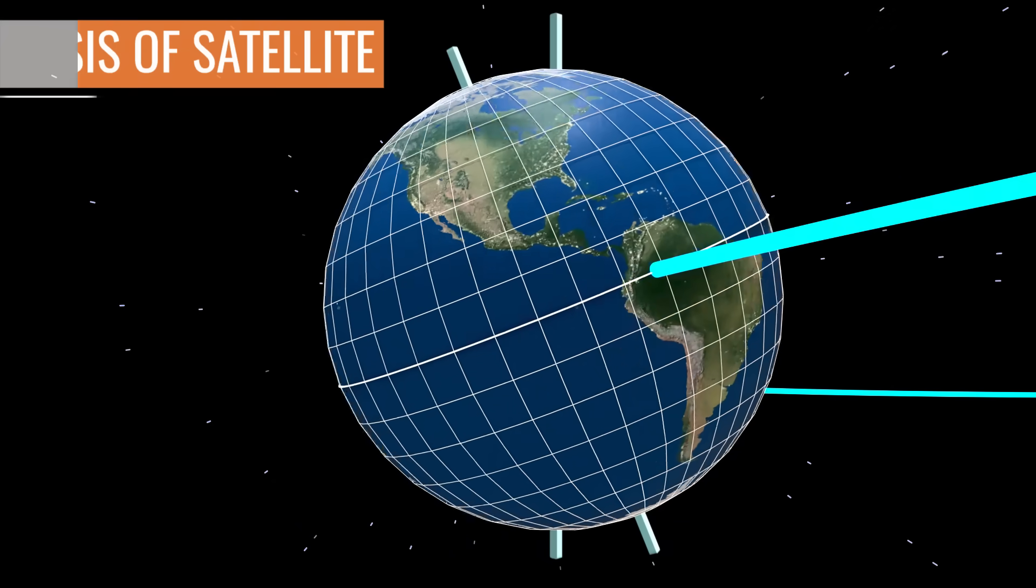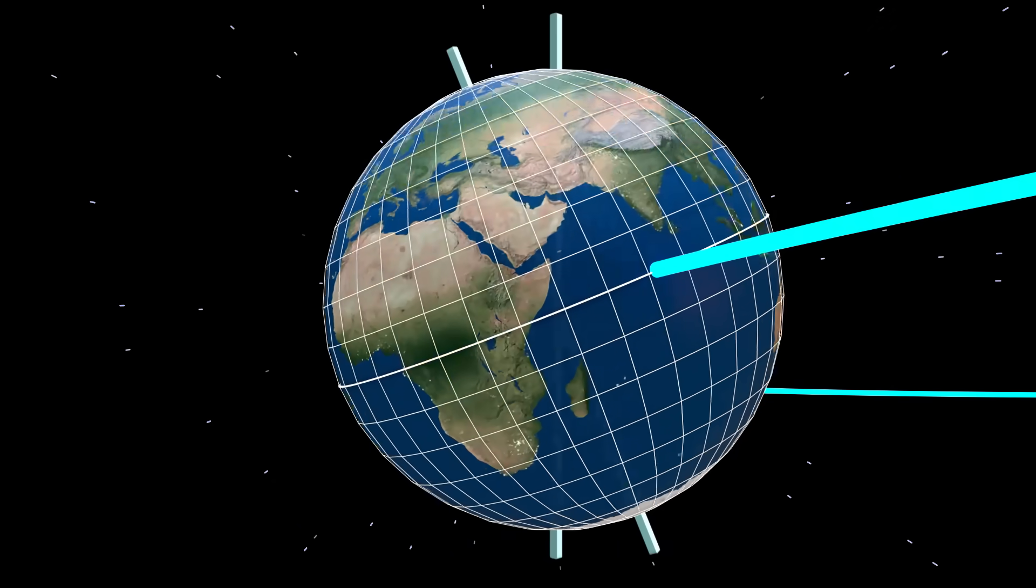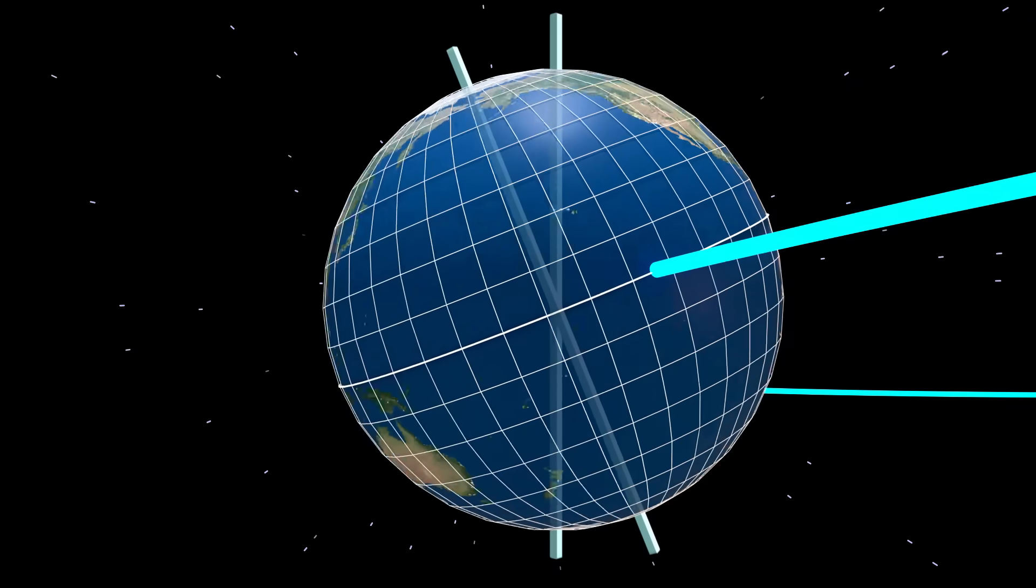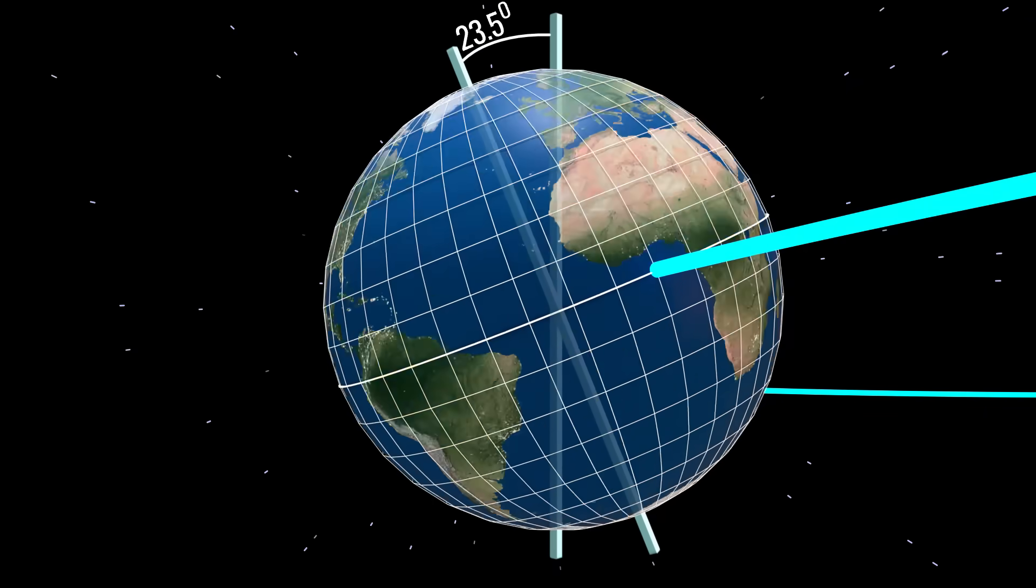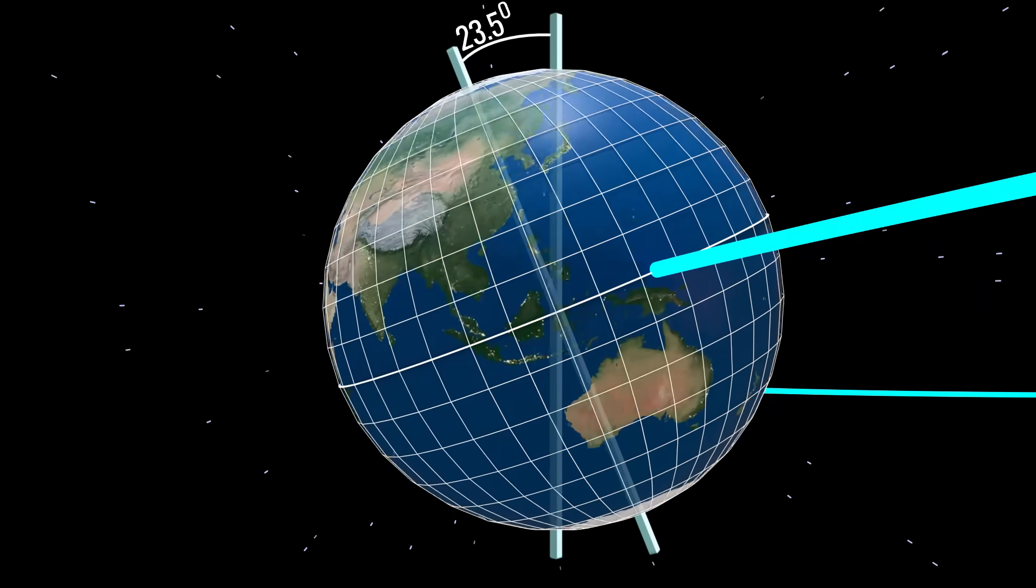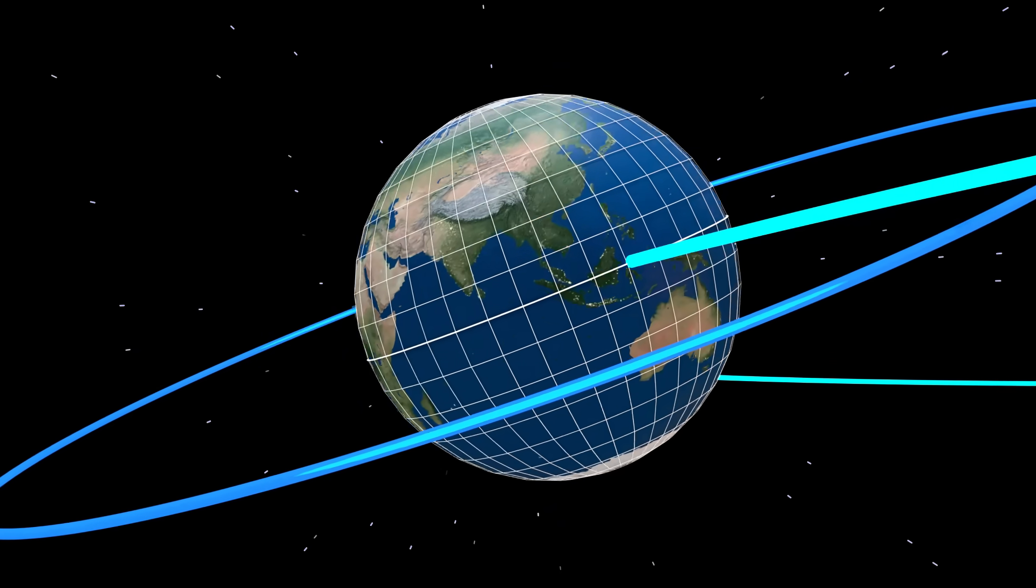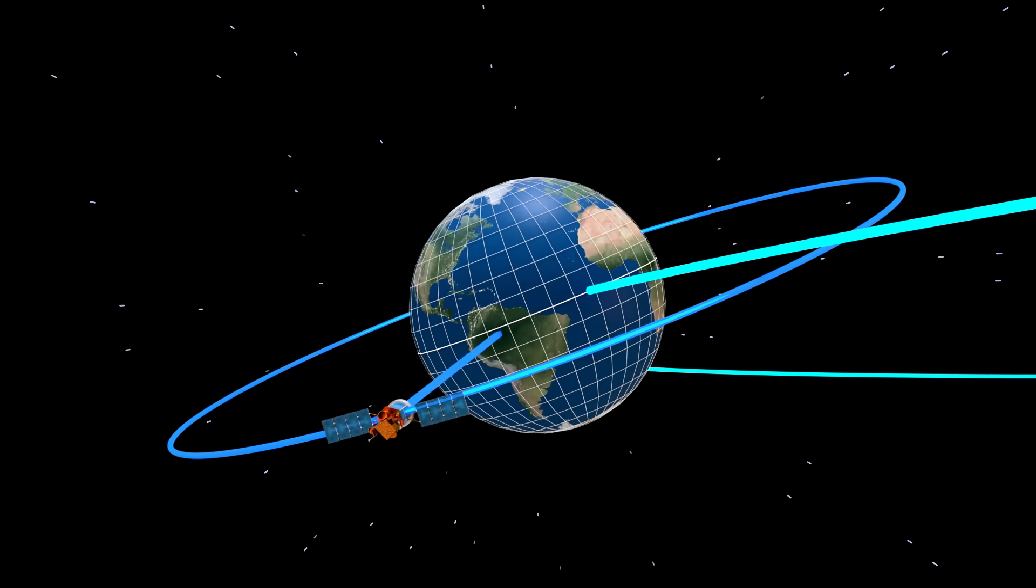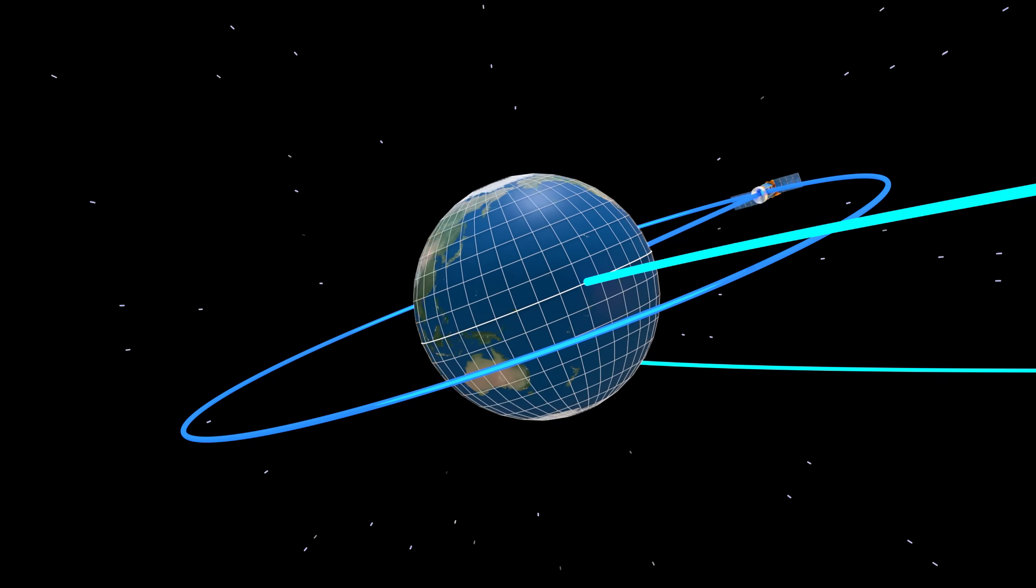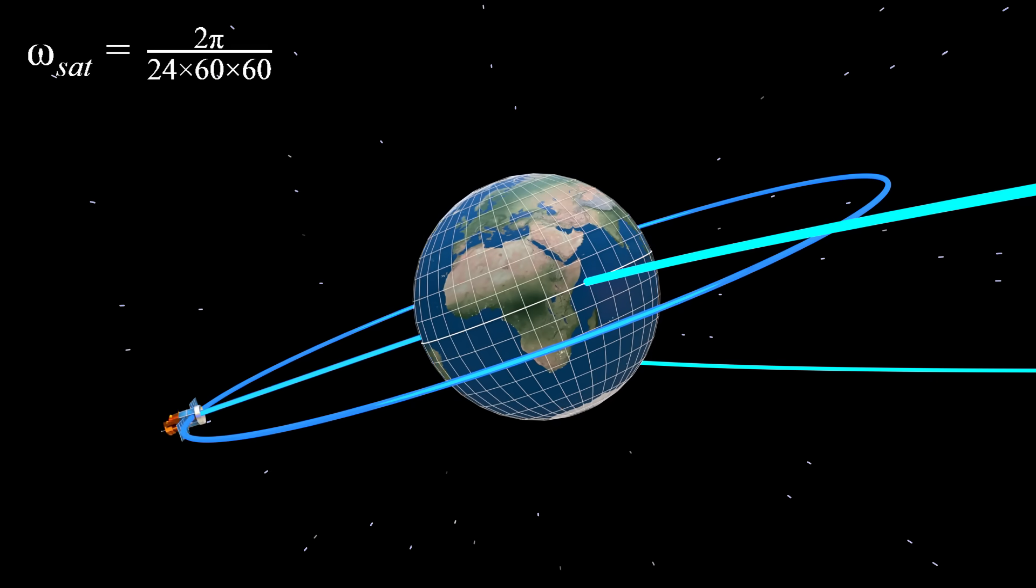You can see that this axis of rotation is not perpendicular to the elliptical orbit surface, but slightly inclined as shown. For satellite TV to work, the satellite should not move relative to your house. This means that the satellite should rotate at the same speed as that of the Earth, which means it will take 24 hours to complete one cycle.